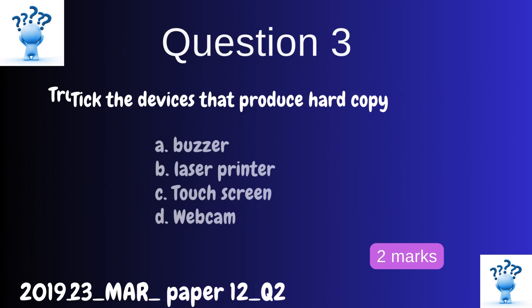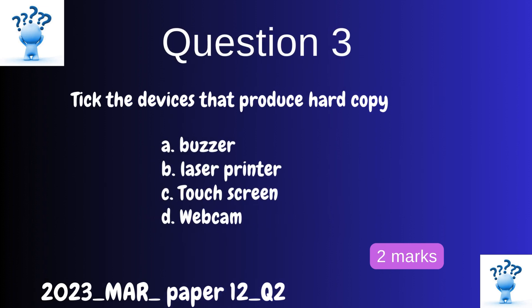Question 3. Tick the devices that produce hard copy. A. Buzzer. B. Laser printer. C. Touchscreen. D. Webcam.